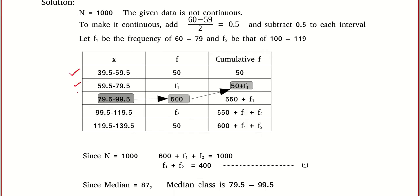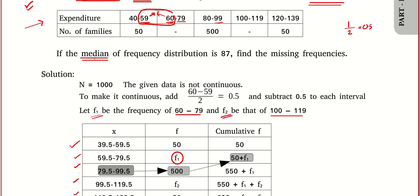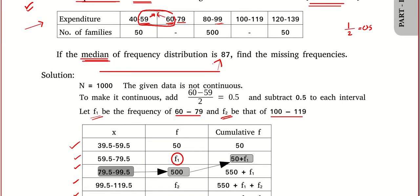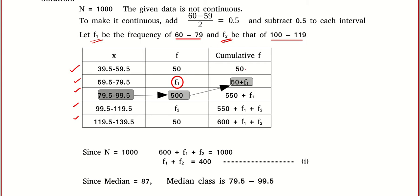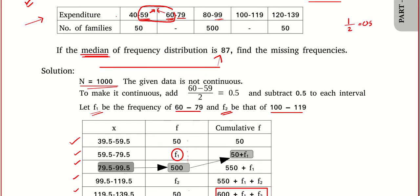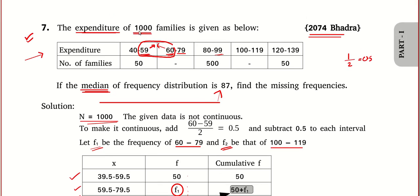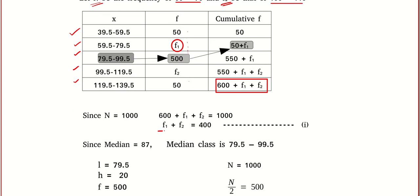The data is now in continuous format. This question asks you to find the missing frequencies. Let the required frequencies be f1 and f2. The median value is already given, so I hope you remember the method — if not, pause and watch the other video. One equation: the sum of all frequencies is 600 plus f1 plus f2, which equals 1000, since the expenditure of 1000 families is given. This gives one equation connecting f1 and f2.